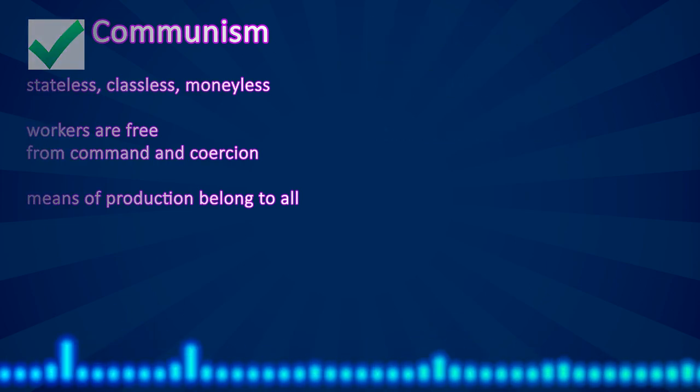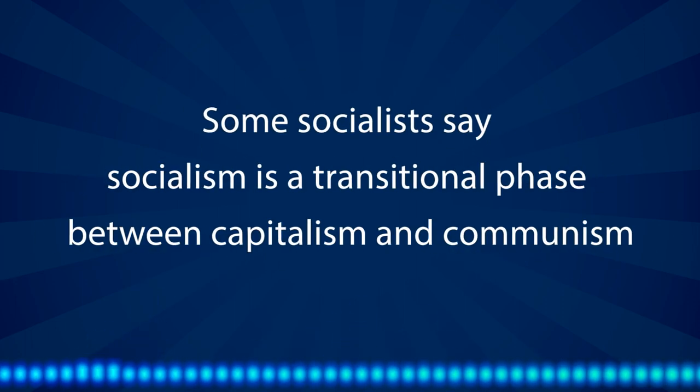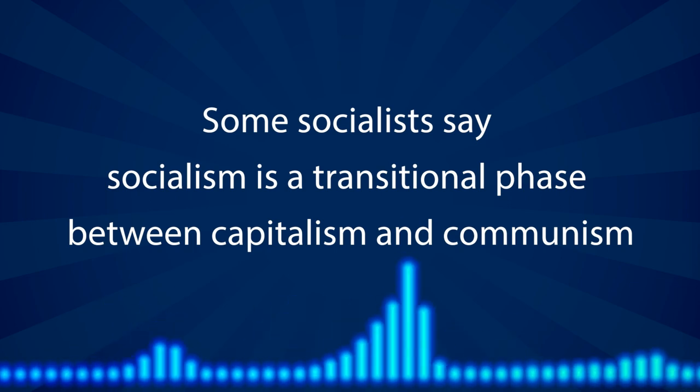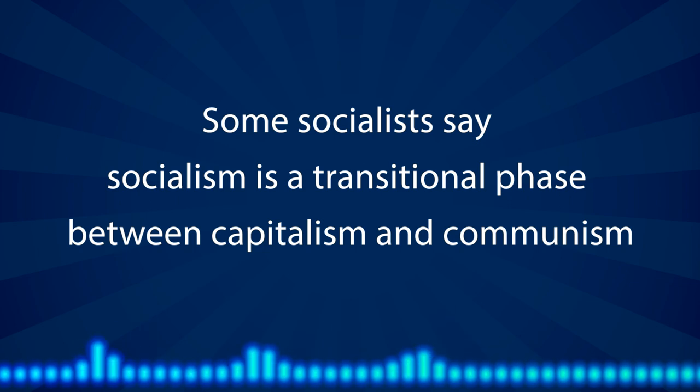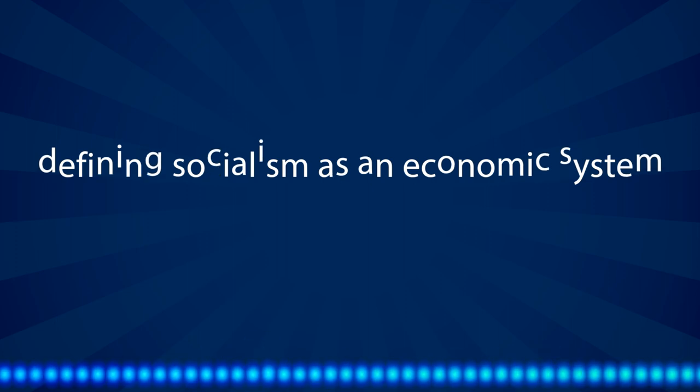Now it's time for Part 2: defining socialism. Among people who identify as socialist, there is no agreement on what socialism means, and that's why defining socialism is so hard. Some socialists say that socialism is a transitional phase between capitalism and communism, and then another subset says socialism is nothing more than this transitional phase. I'll discuss this view in my next video. But for now, let's focus on defining socialism as an economic system.